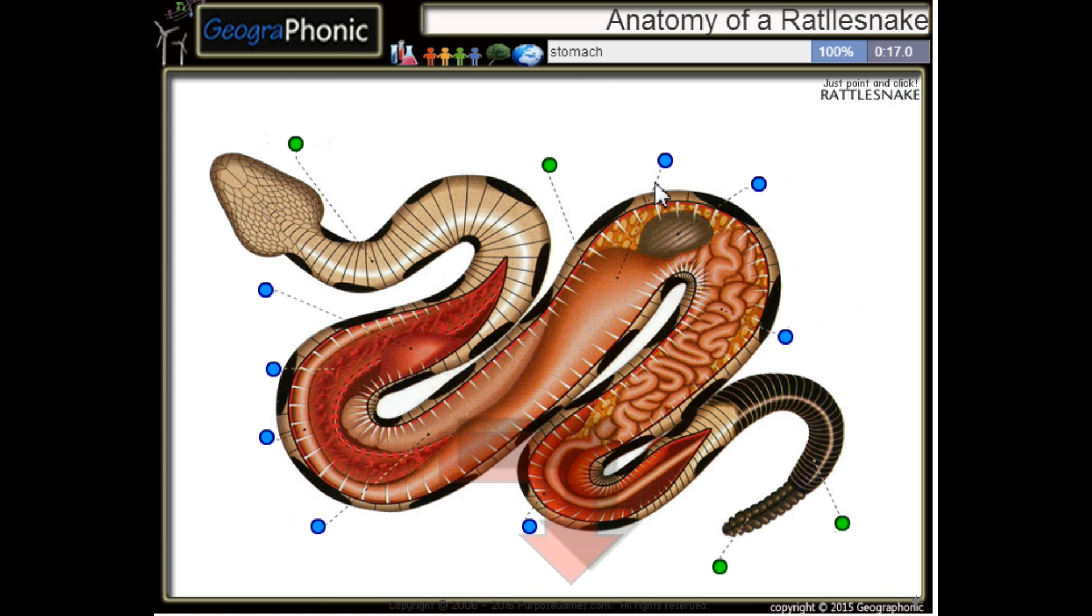This is a rib, a single rib. This is the stomach of the rattlesnake.